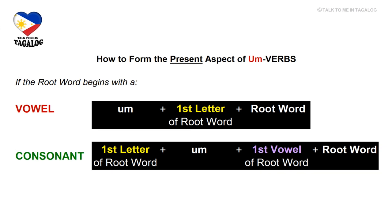So how do we form the present tense of um-verbs? Just remember these two simple rules. If the root word begins with a vowel, just repeat the first letter of the root word and add 'um' at the beginning. To make it simple: um + first letter of the root word + root word. You will see how it works in our examples.